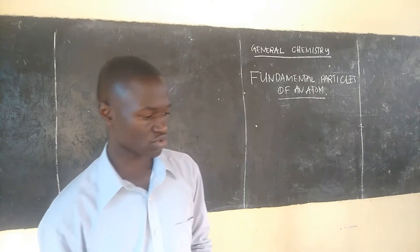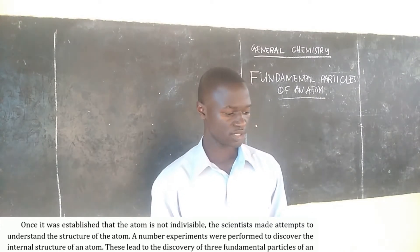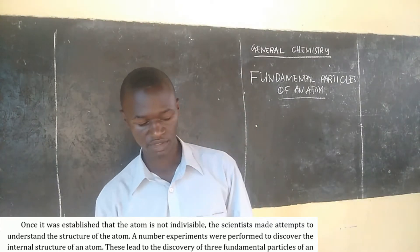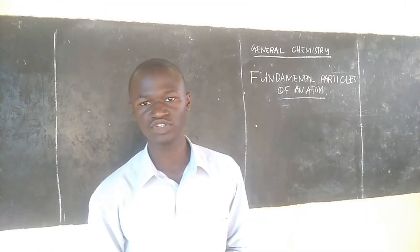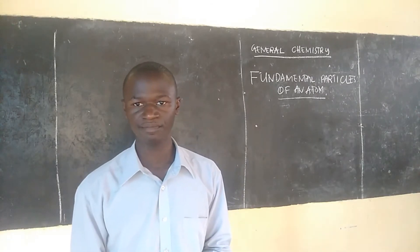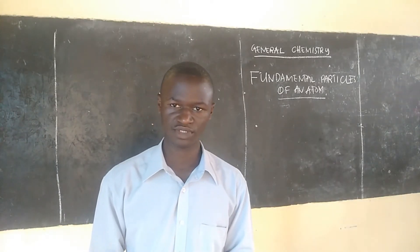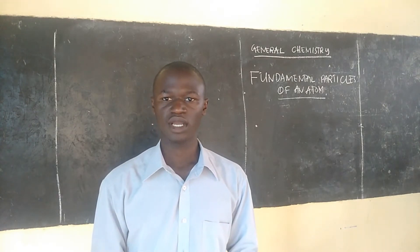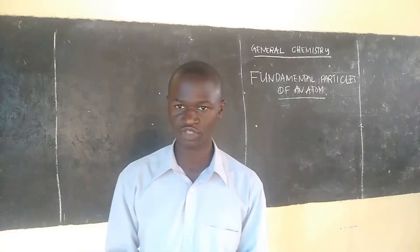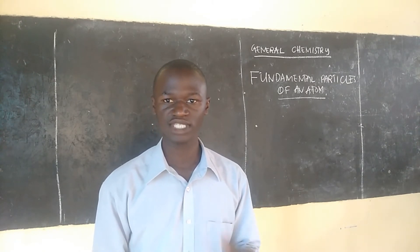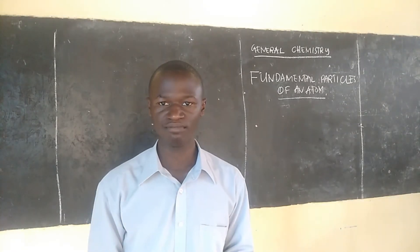Once it was established that the atom is not indivisible — that means the atom is divisible and can be divided into smaller particles — the question came: what are these particles? What are these smaller particles making up an atom? Later the question also arose: how are these particles arranged within an atom?